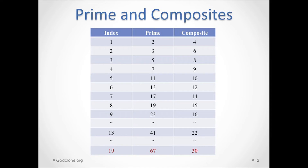Now you can tabulate primes and composites together. As you see, primes get bigger a lot faster than composites. For example, the 19th prime is 67, and the 19th composite is 30. So that means there are a lot more composites than there are primes.